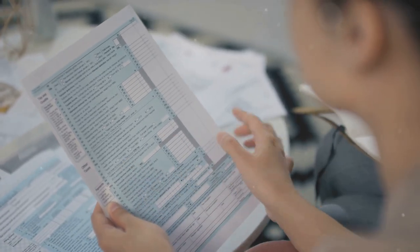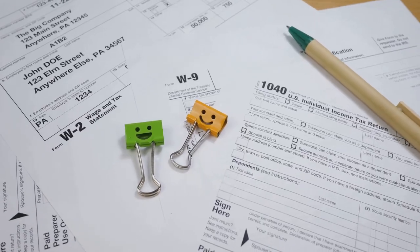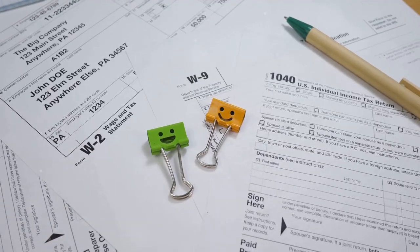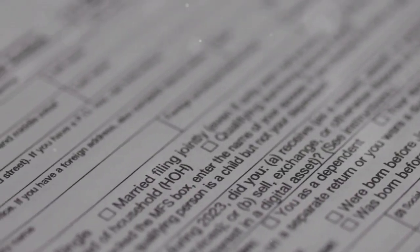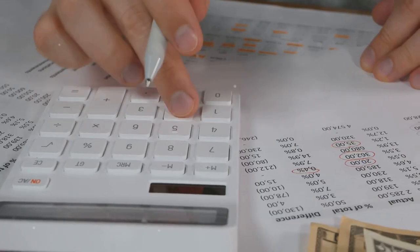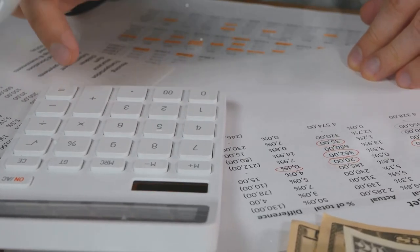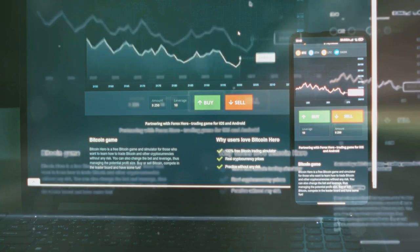Sounds scary, right? But don't worry, it's simpler than it sounds. Form 8949 is where you report your capital gains and losses from crypto trades. You need to list every single crypto transaction you made, yes, even that one time...